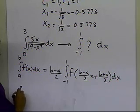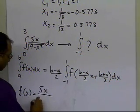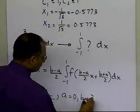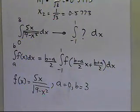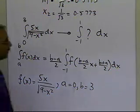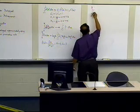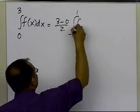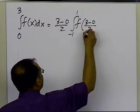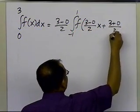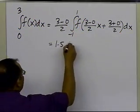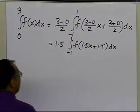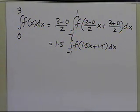In this case, f(x) is 5x divided by the square root of 9 minus x squared, a is 0, and b is 3. Based on these values, we can rewrite our integral going from 0 to 3 as (b minus a)/2 times the integral from minus 1 to plus 1 of f evaluated at (b minus a)/2 times x plus (b plus a)/2, dx. This gives us 1.5 times the integral from minus 1 to plus 1 of f(1.5x plus 1.5), dx.